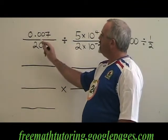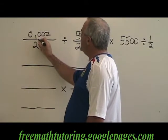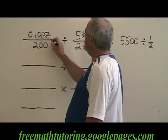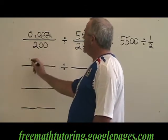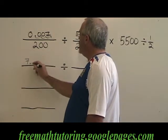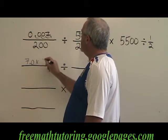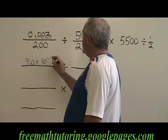So with 0.007, I move in my decimal 1, 2, 3 spaces to the right. So this becomes 7.0 times 10 to the negative 3.